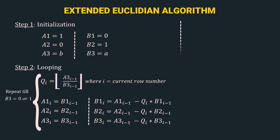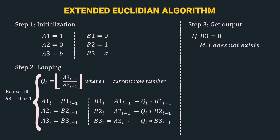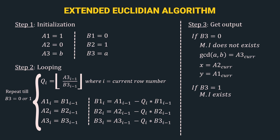In the loop, b1(i) = a1(i-1) − q_i · b1(i-1), similarly b2(i) = a2(i-1) − q_i · b2(i-1), and b3(i) = a3(i-1) − q_i · b3(i-1). The stopping condition is b3 = 0 or b3 = 1. In step 3, if b3 = 0, the multiplicative inverse doesn't exist; gcd = a3, x = a2, y = a1. If b3 = 1, the multiplicative inverse exists; gcd = b3 = 1, x = mi = b2, and y = b1.